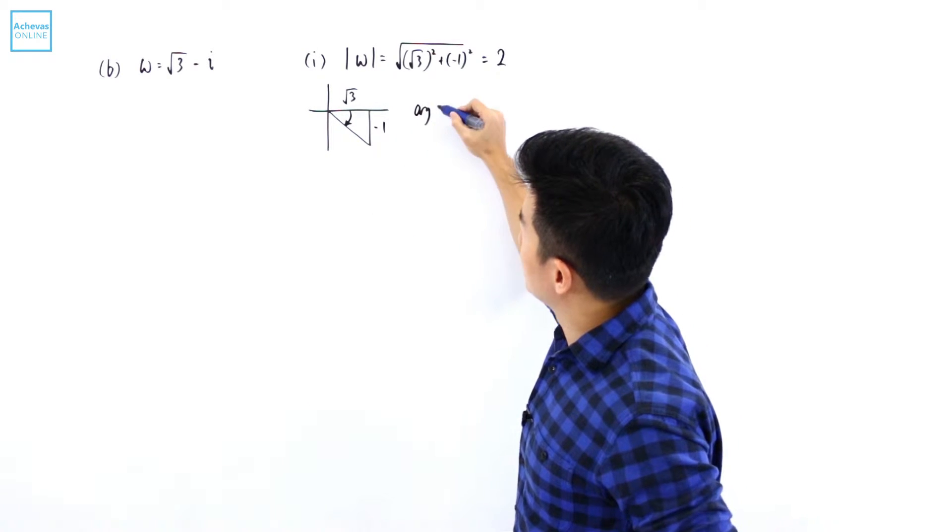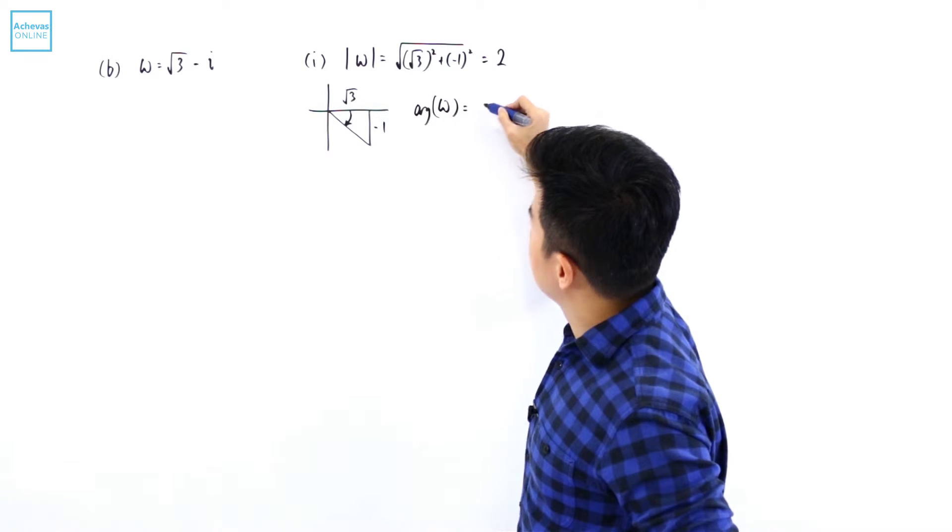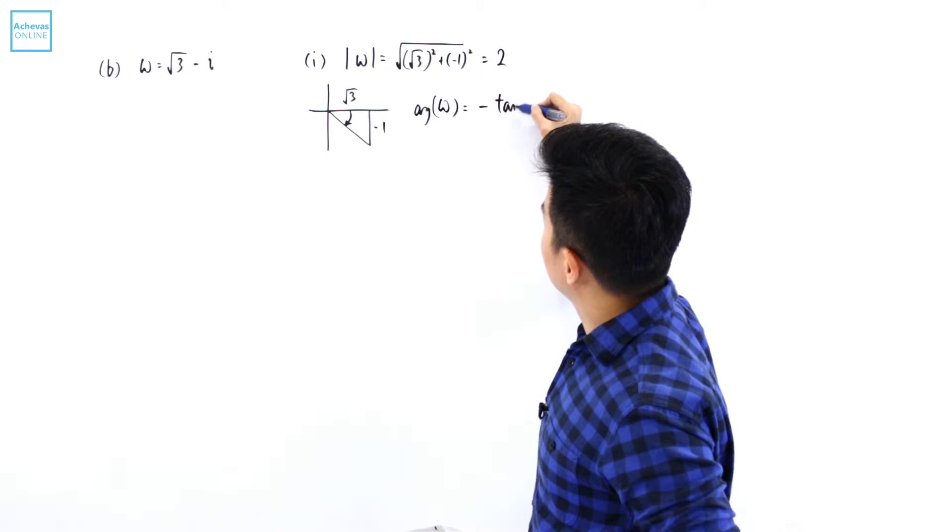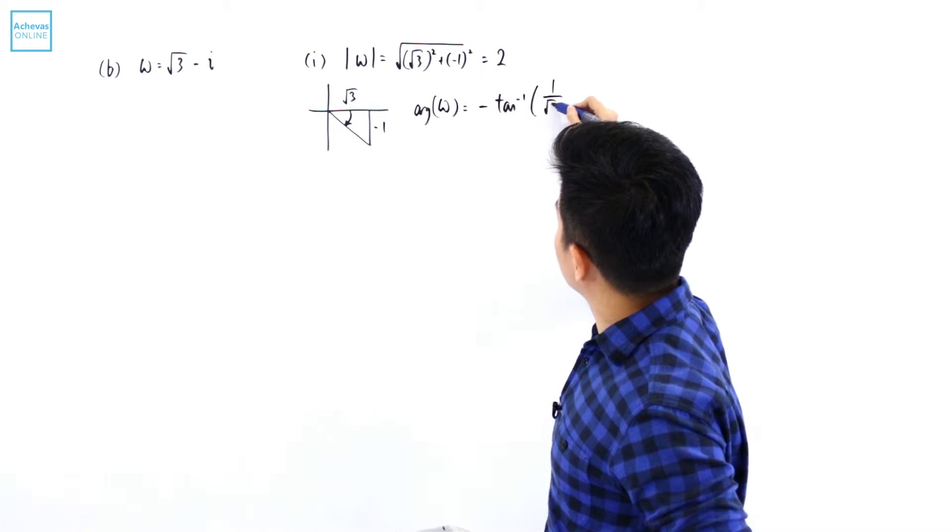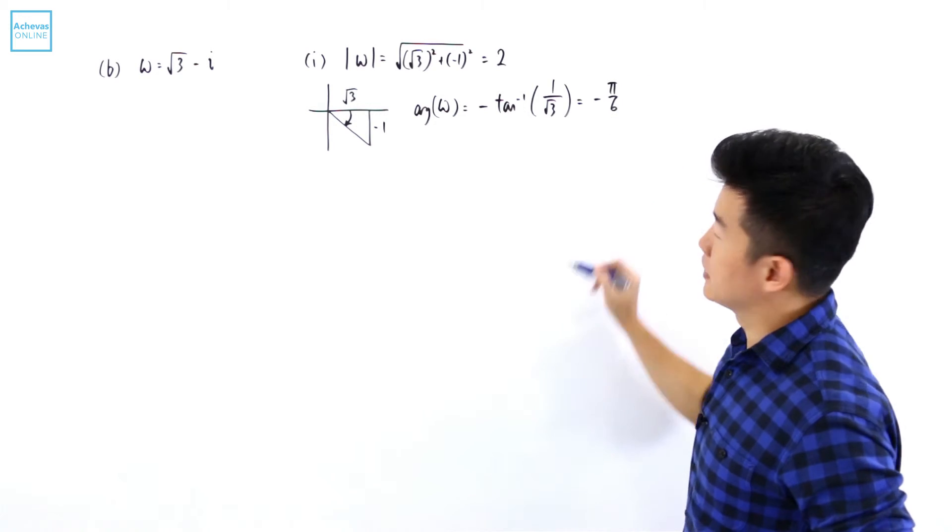And this is the argument of w. This is going to be negative of tangent inverse of 1 over square root of 3. This is minus pi over 6.